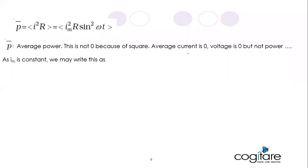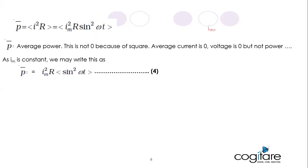To recap: average current is zero, average voltage is zero, but power is not zero. Now, is Im a constant value or a changing value? Im is constant — it is the peak value.